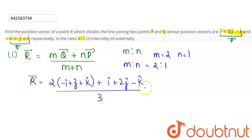So this is equals to, 2 times this vector will be minus 2I cap plus 2J cap plus 2K cap, plus I cap plus 2J cap minus K cap, whole divided by 3.